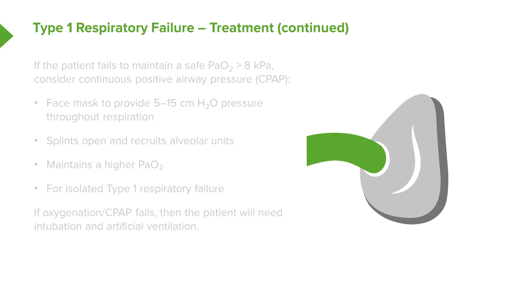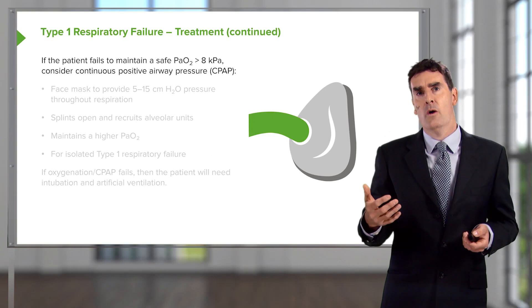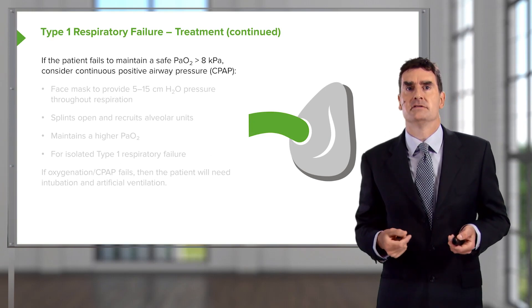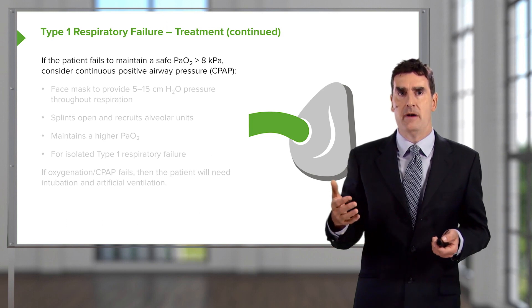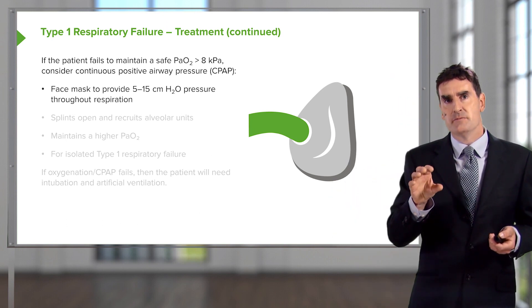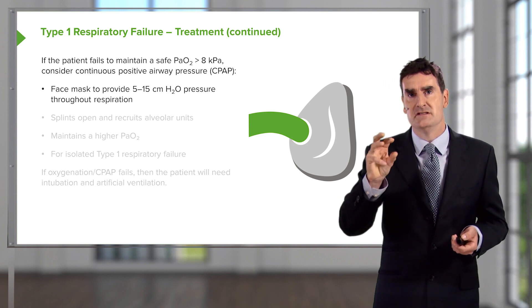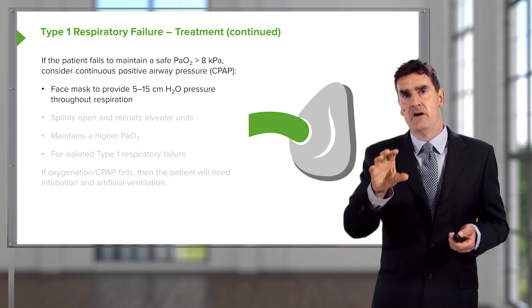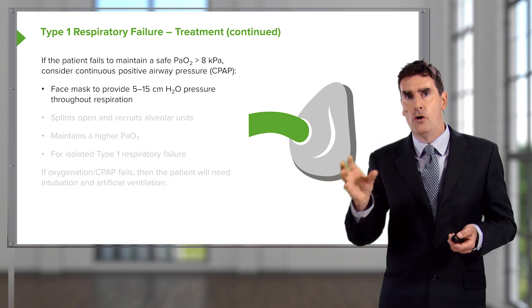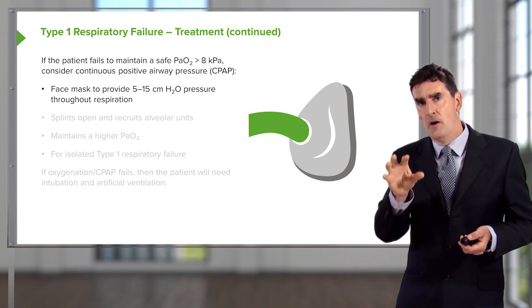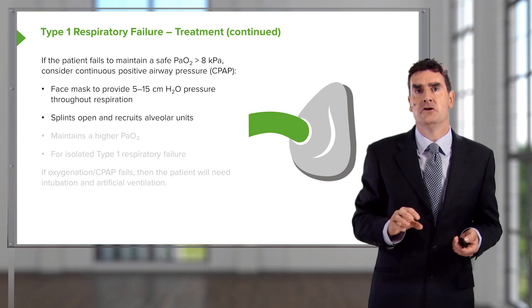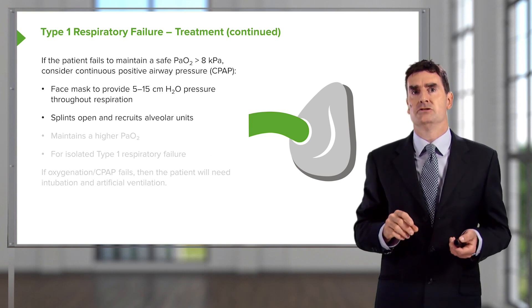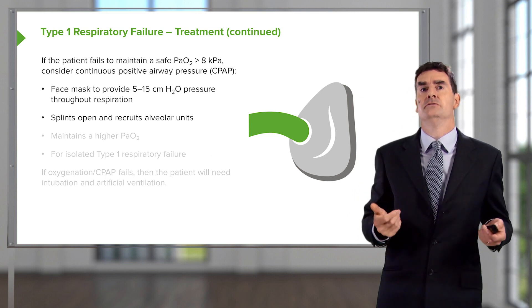If the patient remains hypoxic or has a very high respiratory rate despite oxygen from a mask or non-rebreathing bag, there is a non-invasive form of ventilatory support called Continuous Positive Airway Pressure — CPAP. This is a face mask that provides a small amount of additional pressure, 5 to 15 centimeters of water, maintained throughout the whole of respiration — both inspiration and expiration. This recruits more alveolar units available for the patient's respiration.